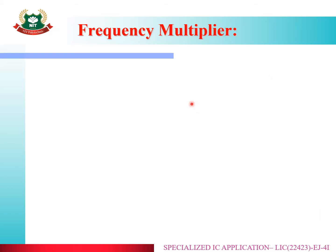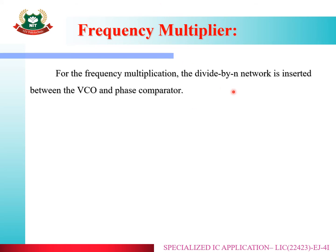One of the applications of PLL is a frequency multiplier. For frequency multiplication, the divide-by-N network is inserted between the VCO and the phase comparator.